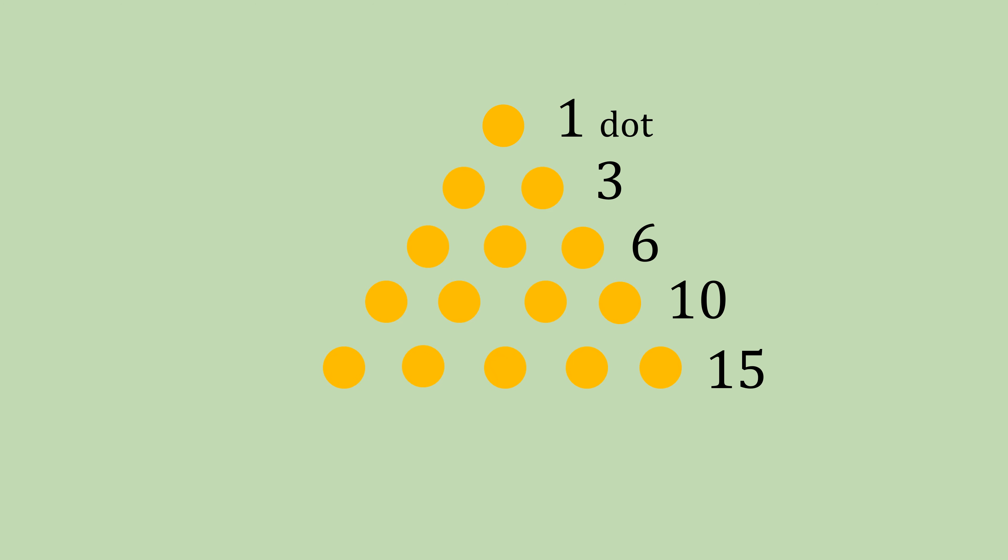So if we look at these numbers, one to three, you add two. From three to six, you would add three. From six to ten, you would add four. Here you can notice there is a plus one pattern.